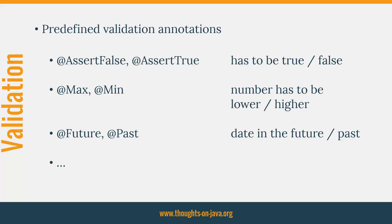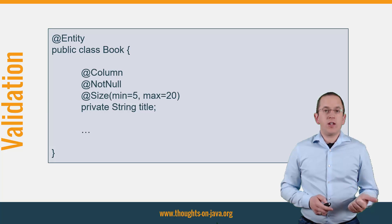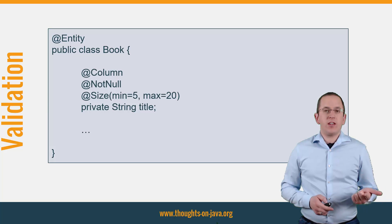The Bean Validation specification defines a set of annotations which you can use to perform standard validations on your entity attributes. You can see a few of them here on the slide. You can also provide your own validation rules. Please have a look at the Java doc and the Bean Validation specification to learn more about standard and custom validation rules.